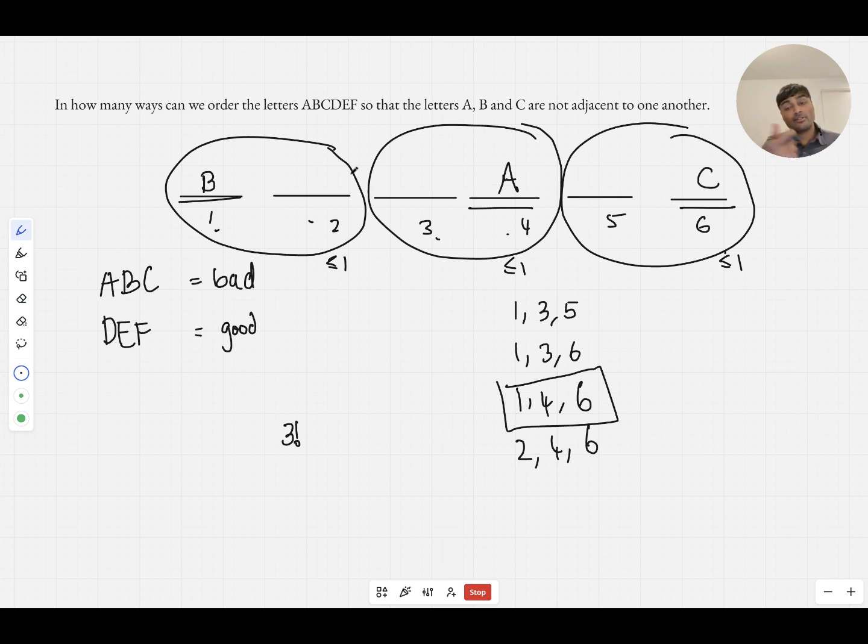Then I'm left with three remaining spots, two, three and five, in which I need to place the letters DEF. And because they're good letters, they're nice and easy, no stress about where those go. I can place them however I want, and again there's three factorial permutations of those.